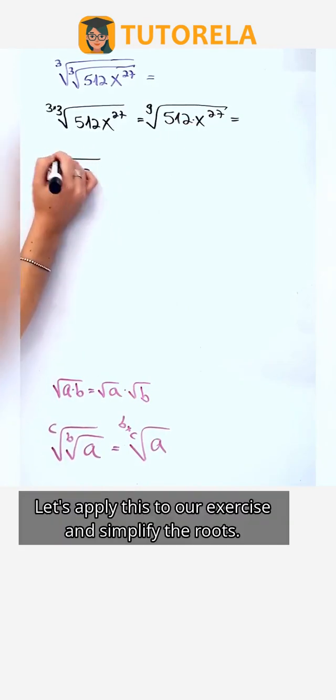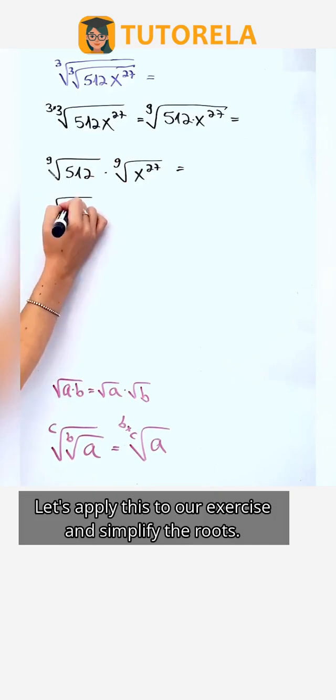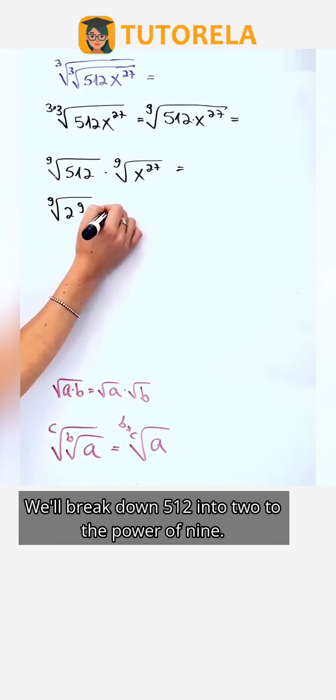Let's apply this to our exercise and simplify the roots. We'll break down 512 into 2 to the power of 9.